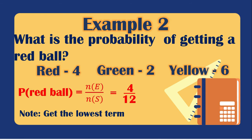The answer must be in lowest terms. The GCF of 4 and 12 is 4. Dividing both by 4 gives 4/4 = 1 and 12/4 = 3. So the probability of getting a red ball is 1/3.